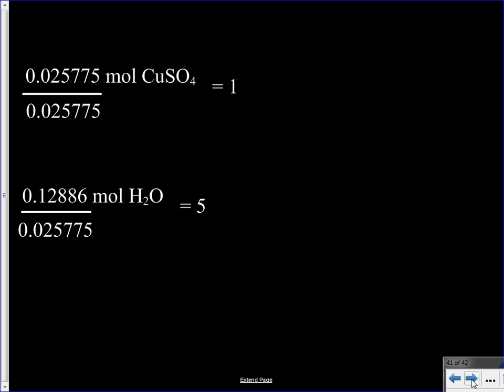So we can now write our chemical formula for the hydrate of copper sulfate. We have the CuSO4 and we put a little dot there and the dot says that those five water molecules that are listed are bound up in the crystal structure of the copper sulfate. Or we could call this a copper sulfate pentahydrate.